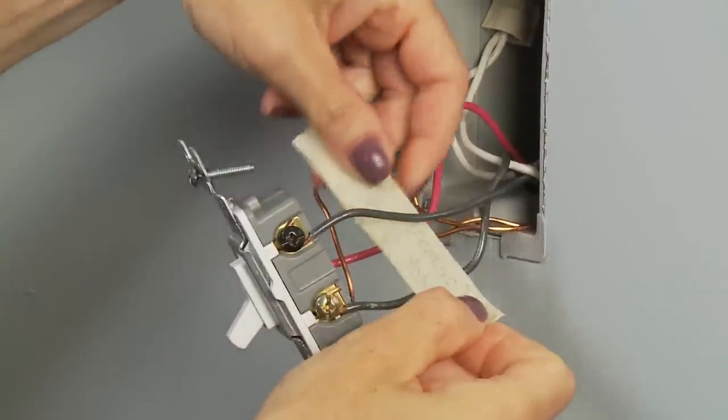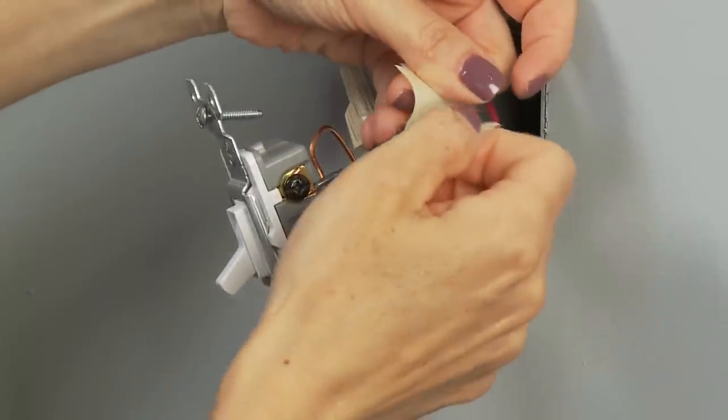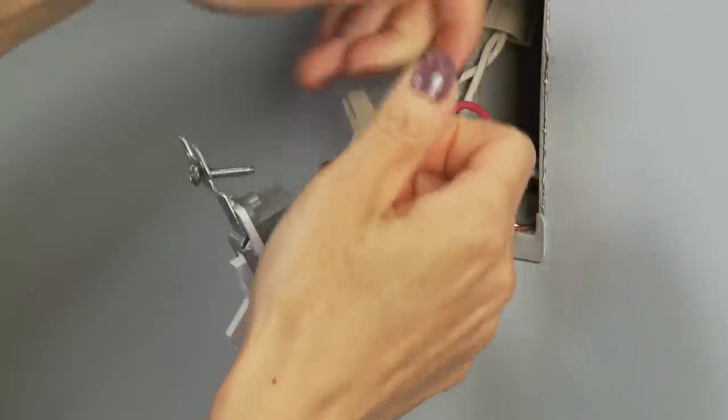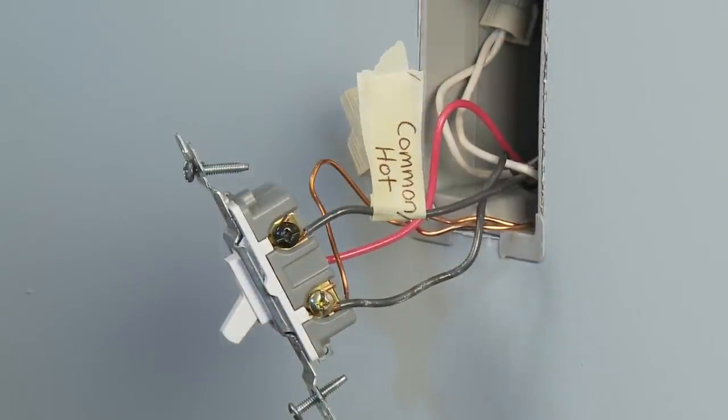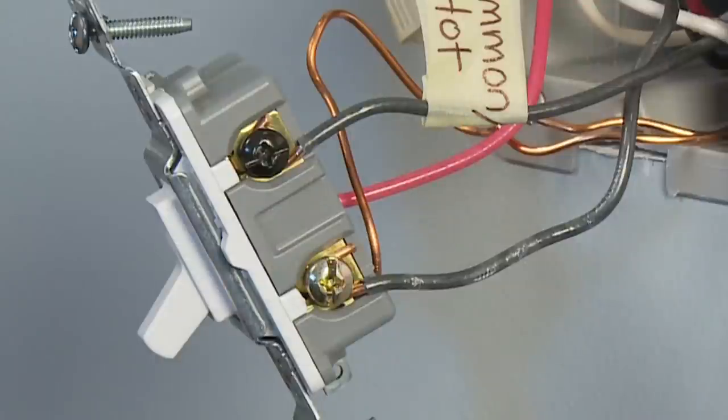If your light is controlled by more than one switch or dimmer, you have a three-way installation and you will need to determine which wire is common. It should be labeled as common or hot or marked by an odd-colored screw.